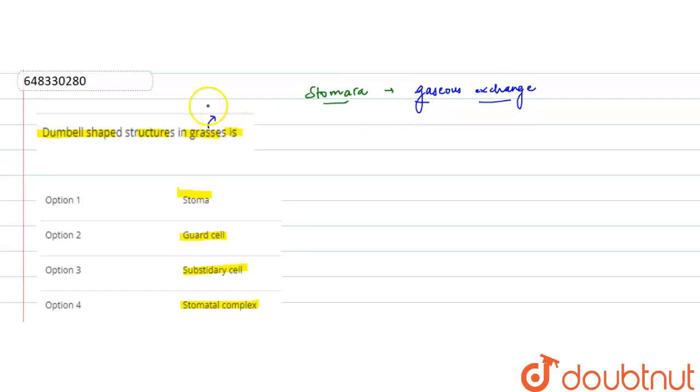And remember this, grasses are the monocots. So basically in dicots, this stomata structure is basically enclosed by the bean shaped cells, bean shaped cells enclosed by bean or the kidney shaped cells. Those are termed as the guard cells.